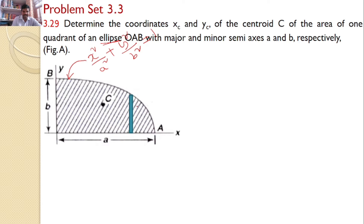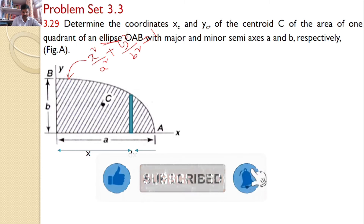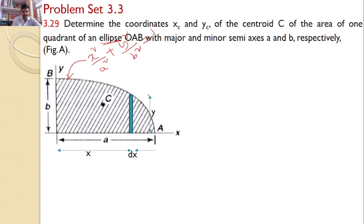I will consider a small rectangular element which is at a distance X from the origin, with thickness DX. Let the height of the strip be Y. Since it is a rectangular shape, the centroid is exactly at the center. YG is the Y-coordinate of the centroid of that rectangular strip, and XG is the X-coordinate of the centroid of the rectangular strip.